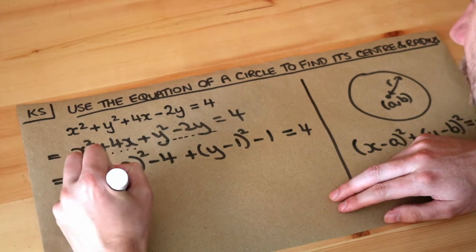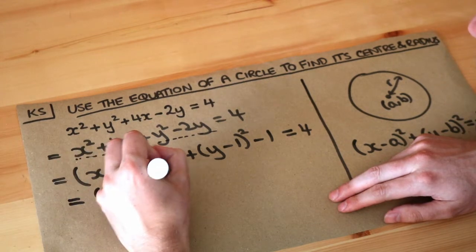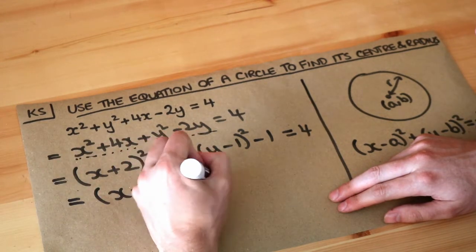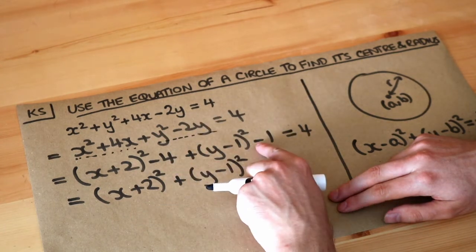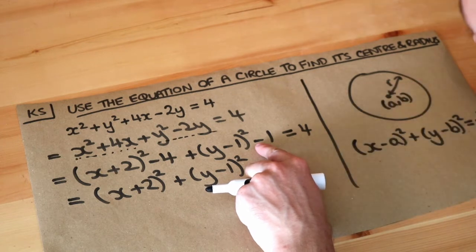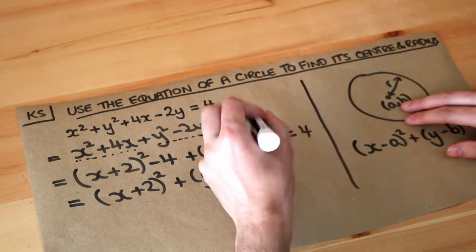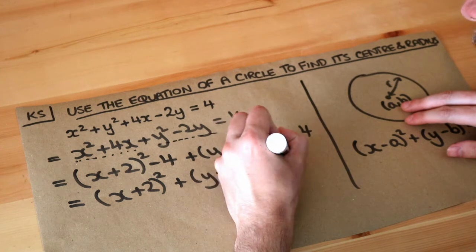So let's move those to the other side of the equation. So you've got the x plus 2 squared, you've got the y minus 1 squared. And then the minus 4 minus 1 is minus 5. The minus 5 we add to both sides of the equation, so we get 4 plus 5 and that's going to give you 9.